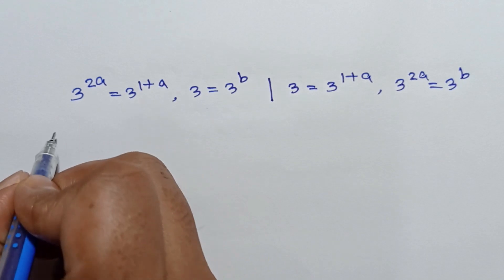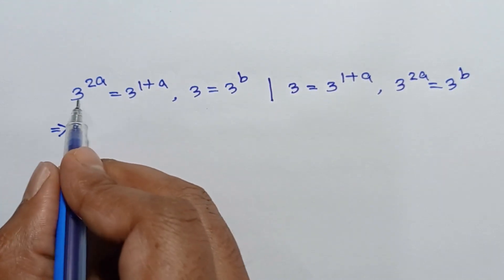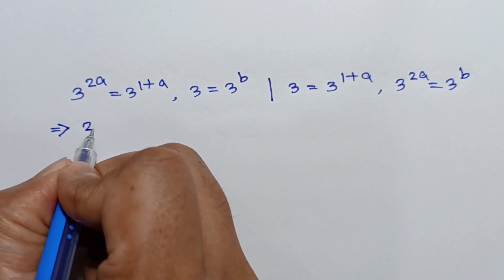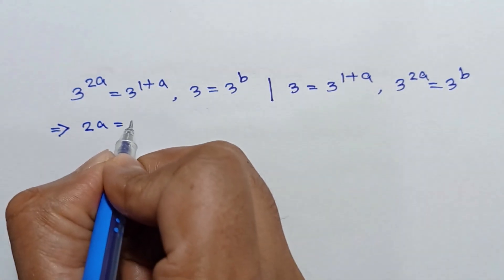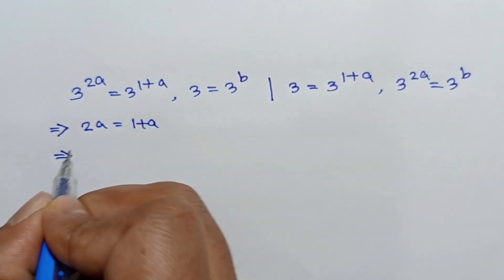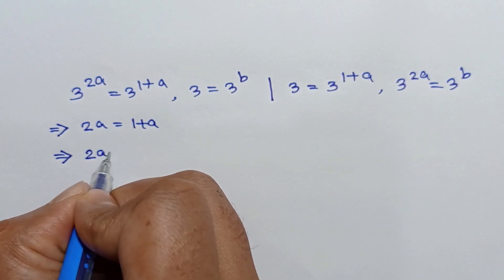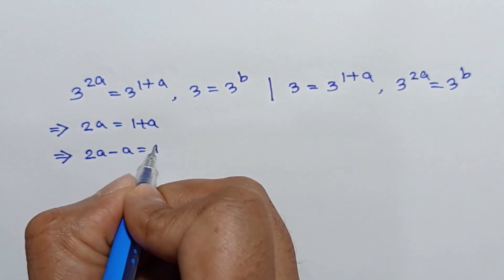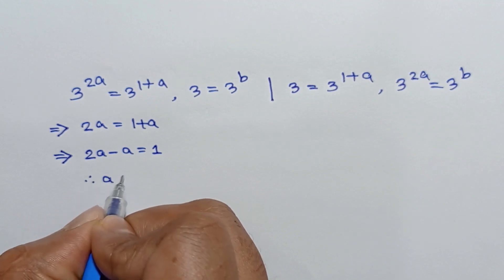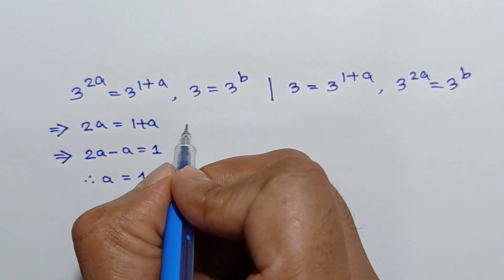From the first case, the bases are the same so powers are equal, giving twice a is equal to 1 plus a. Taking a to the left side: twice a minus a is equal to 1, so the value of a is equal to 1.